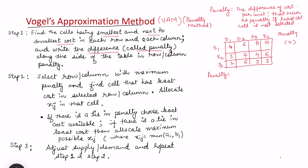Although most commonly we name it as VAM, in some literature it is also written as the penalty method. The penalty is written along each row and each column. The penalty means it is the difference in cost per unit that is going to occur if we skip the least cost. To understand this, let's take an example with three sources and four destinations. In the first source, the least cost is 4 and the next least cost is 6.